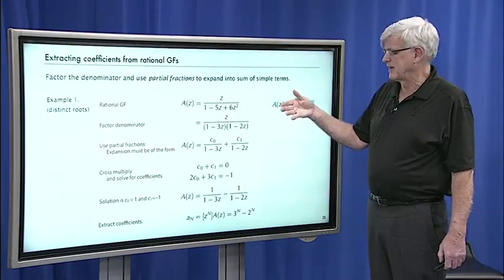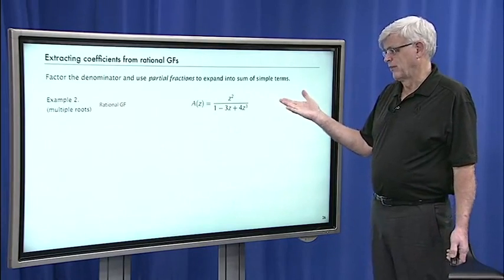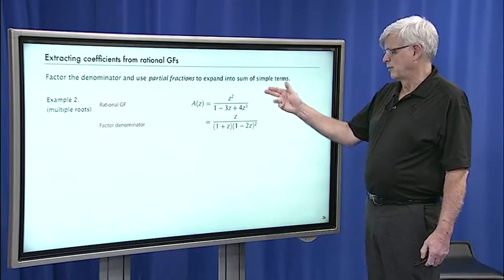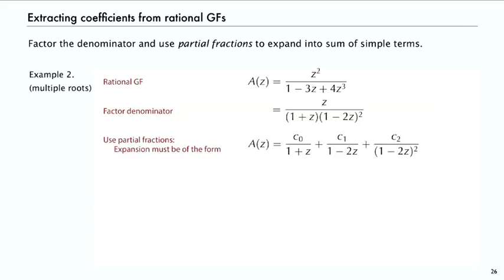We can get into different situations depending on the character of the roots. One thing that can happen is that you can have roots of higher order. For example, with a generating function where the denominator factors as 1 plus z times the quantity 1 minus 2z squared, we're going to need three terms in the partial fractions expansion — one for 1 minus 2z and another for 1 minus 2z squared. In general, if a root appears three times we need three terms, four times four terms, and so forth. Multiple roots lead to more terms in the partial fraction expansion.